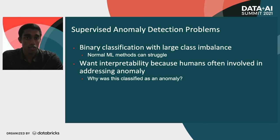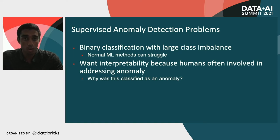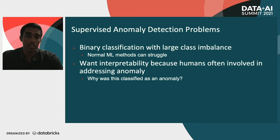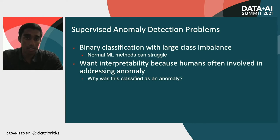This can often cause normal ML methods to struggle — methods that are used to a more balanced dataset of ones and zeros in the binary classification setting. We want interpretability often in these problems because humans are involved in addressing the anomalies. Your anomaly detection system is going to say this data point is an anomaly and the human would like to know why it was classified as an anomaly so they can better understand how to deal with it.